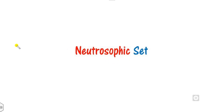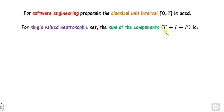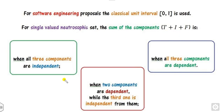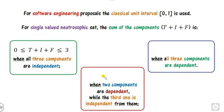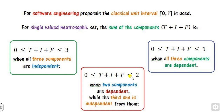Now applying this concept to the Neutrosophic set with three degrees T, I, and F: if all three components are independent, d equals 0, and the sum is less than 3. When two components are dependent and the third is independent, the sum is less than 2. When all three are dependent, the degree is 2 (since there are n minus 1 pairs), so the sum is 3 minus 2 equals 1.